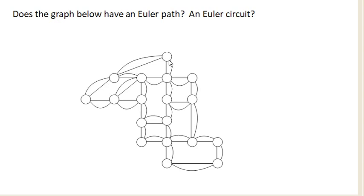Now, if we look at this graph, you can see that every vertex is even degree, and so this graph will indeed have an Euler circuit, because every vertex has even degree.